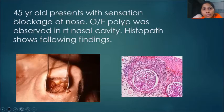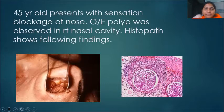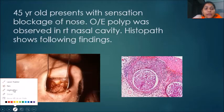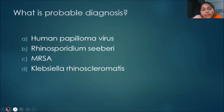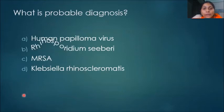A 45-year-old man presents with the sensation of blockage of the nose. On examination, a polyp was observed in the right nasal cavity. Pathology shows the following histopathological findings. The probable diagnosis is Rhinosporidium seeberi. It's quite clear — it is Rhinosporidium seeberi.